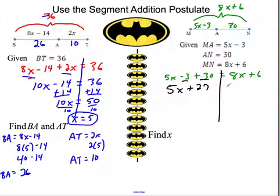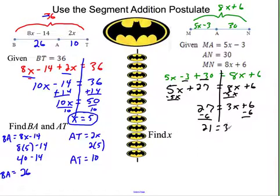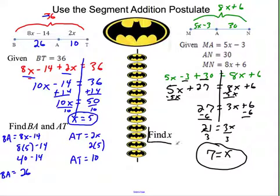Now we're going to solve this. I draw a nice line down the middle and simplify each side first. 5x minus 3 plus 30 is 5x plus 27. Now put all variables on the same side. I'm going to subtract 5x, so 27 equals 3x plus 6. Subtract 6, so 21 equals 3x. Divide by 3, x equals 7. That's all they wanted. They just said find x.